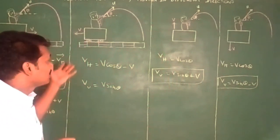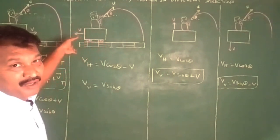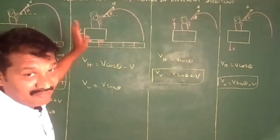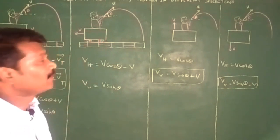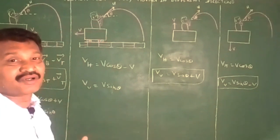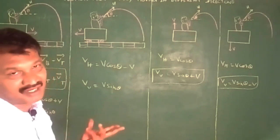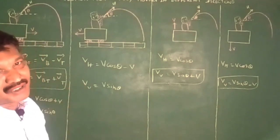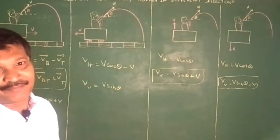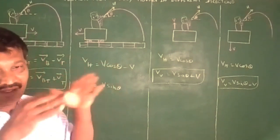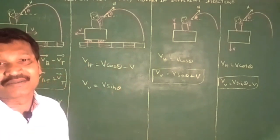Depending on the value of θ, we can calculate the resultant. The magnitude of the resultant velocity is v equal to square root of (v_h squared plus v_v squared minus 2·v_h·v_v·cosθ). The result depends on the application of the concept. Practice these types of questions so you can crack any kind of competitive examination. Keep watching, thanks for watching, subscribe and share.